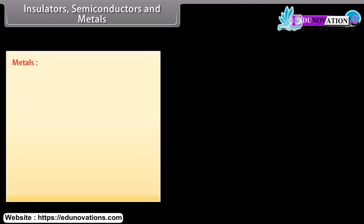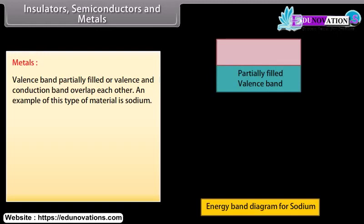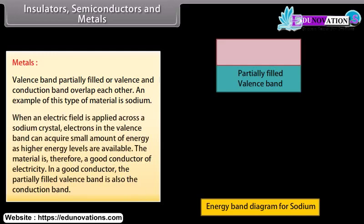For metals, the valence band is partially filled or the valence and conduction bands overlap each other. An example is sodium. When an electric field is applied across a sodium crystal, electrons in the valence band can acquire a small amount of energy as higher energy levels are available. The material is therefore a good conductor of electricity. In a good conductor, the partially filled valence band is also the conduction band.